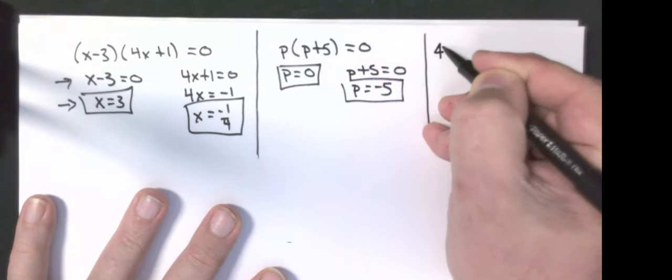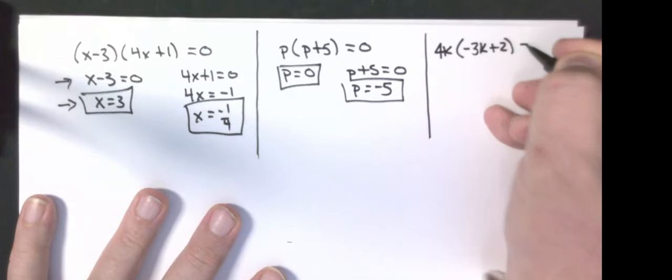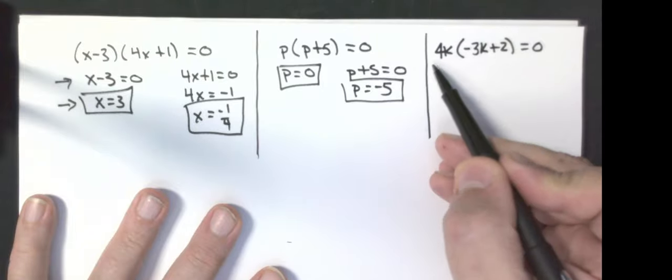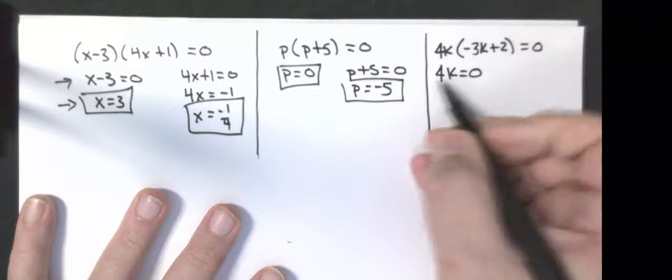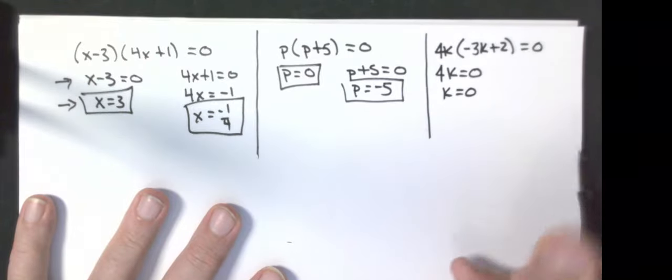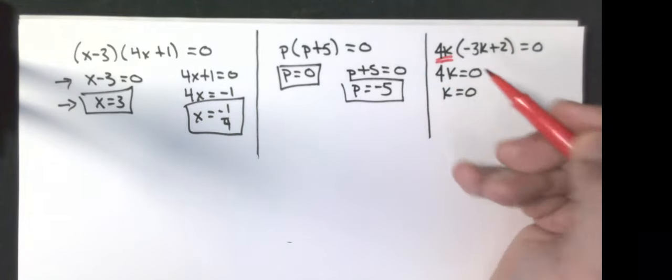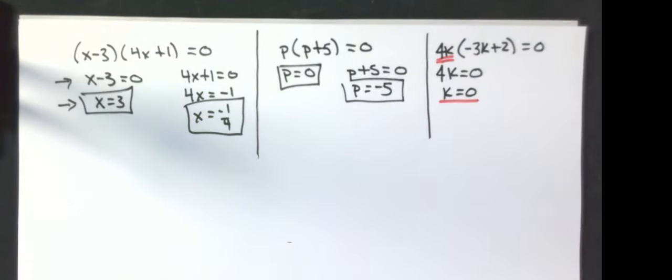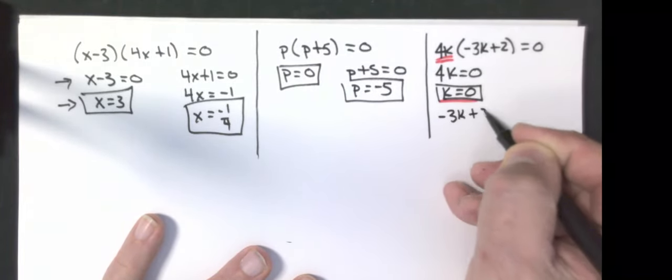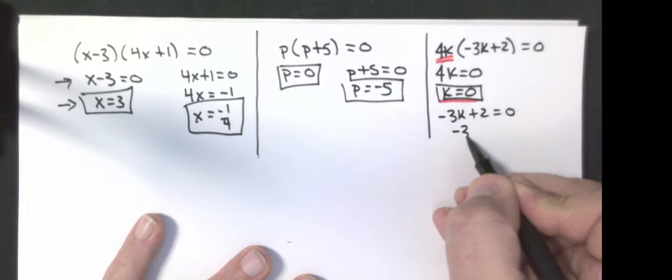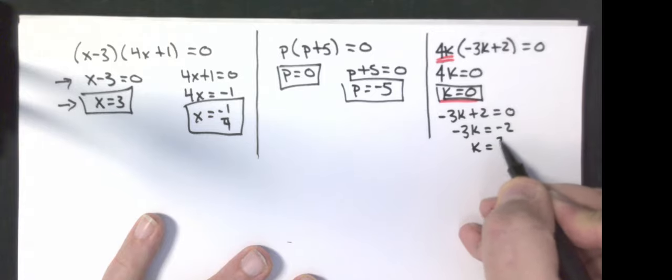Let's do the third little edge case: 4k times negative 3k plus 2 equals zero. Again, I have a multiplication problem whose answer is zero. I get 4k is equal to zero. Divide by 4, I get k is equal to zero. Any time you have any number multiplied by the variable outside, it's always going to be that variable equals zero. Second answer is negative 3k plus 2 equals zero. Subtract the two, negative 3k equals negative 2. Divide by negative three, k is equal to a positive two-thirds.